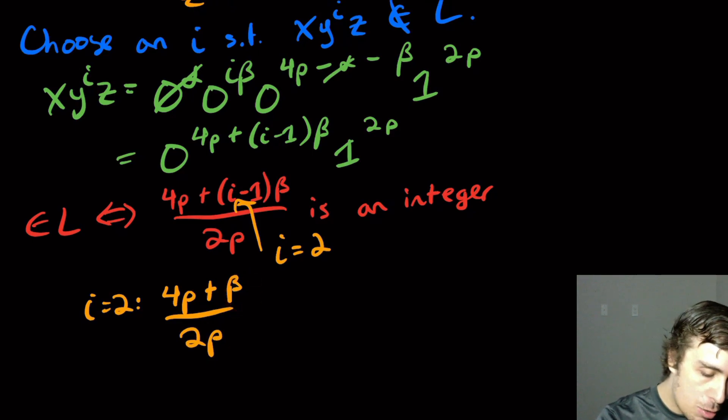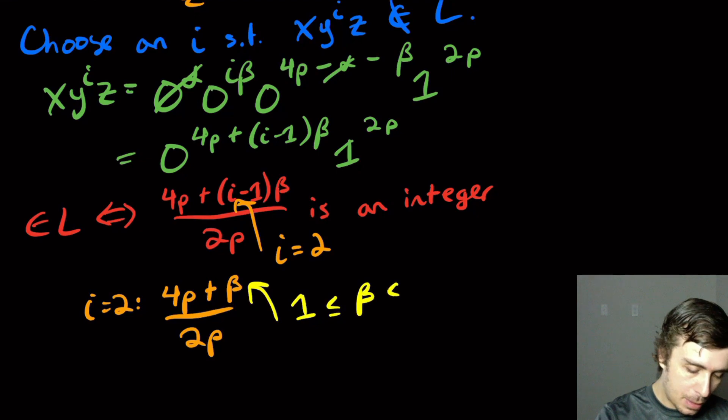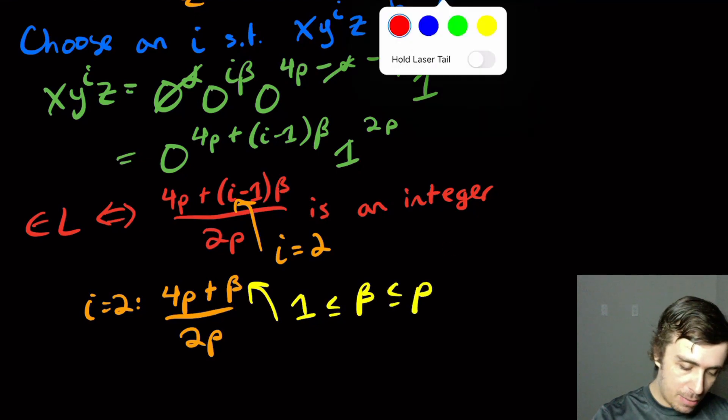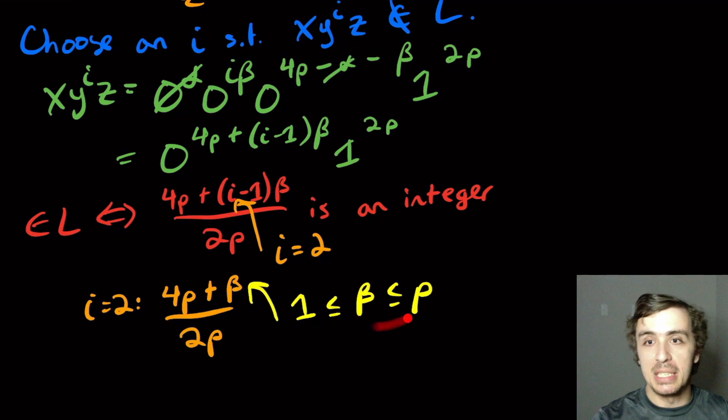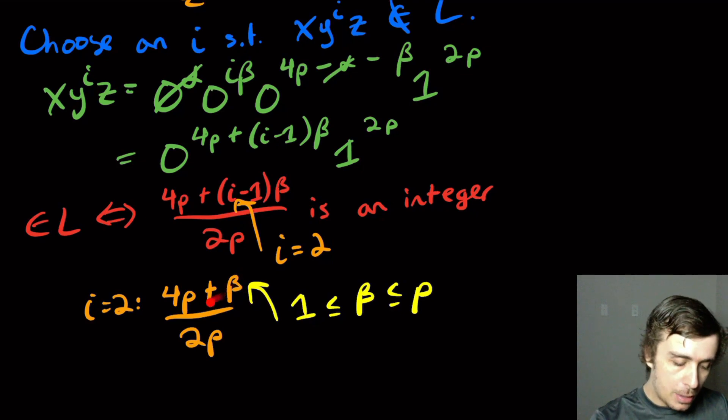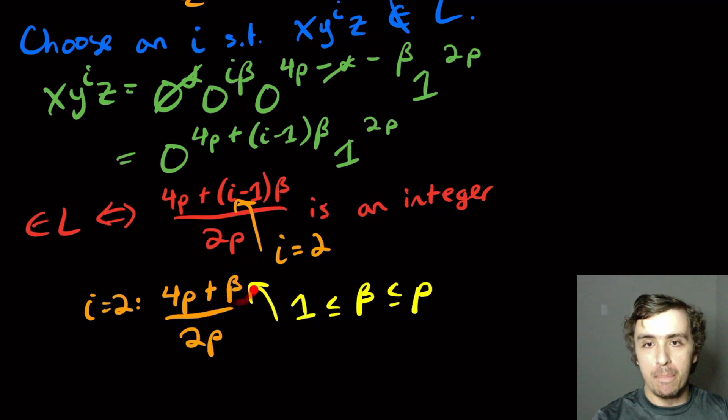But if we look at this, we know from the pumping lemma statement that beta itself is between 1 and p. So where this comes from, the actual statement, one of the things that we need, that the part that we pump is not empty. And this part says that the first two pieces have length at most p in total. And so that's where this comes from. So here, the only way that this could really be an integer is if beta is equal to 2p, because it can't be 0, according to this. And so the next higher point would be 2p for beta, because then this would reduce to 3. If beta was 0, this is 2, and there's no number in between 2 and 3.